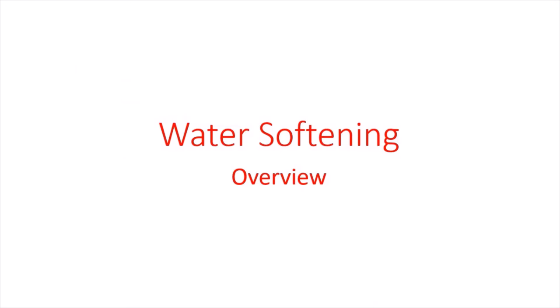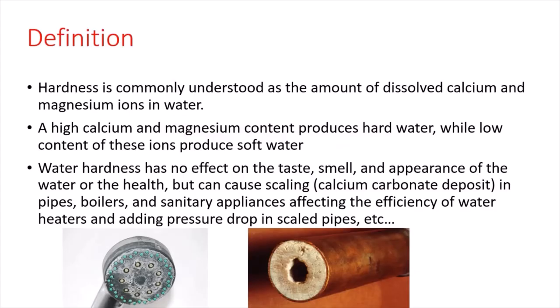Hello and welcome to this new lecture that will be about an overview of water softening. Let's start by defining water hardness. Water hardness is the amount of dissolved calcium and magnesium ions in the water. If we have a high calcium and magnesium content within our water, it is known as hard water.